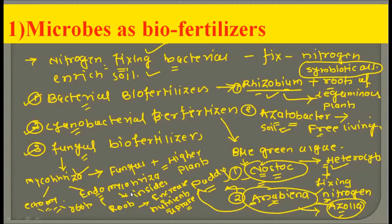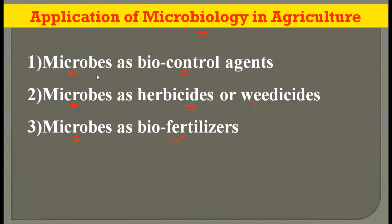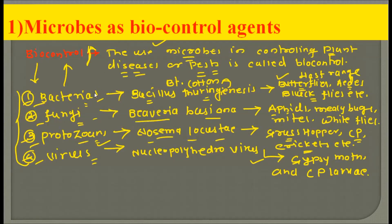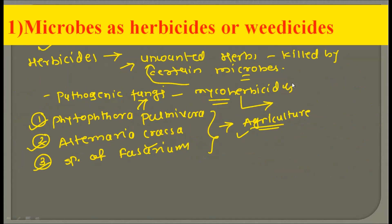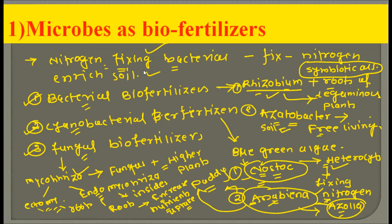We have seen three broad applications of microbiology in agriculture. First, microbes as biocontrol agents: four categories — bacteria, fungus, protozoa, and viruses — with one example each and their host ranges. Second, microbes as herbicides or weedicides: mycoherbicides — Phytophthora palmivora, Alternaria crassa, and species of Fusarium. Third, microbes as biofertilizers: bacterial (Rhizobium, Azotobacter), cyanobacterial (Nostoc, Anabaena), and fungal (mycorrhiza — ectomycorrhiza and endomycorrhiza).